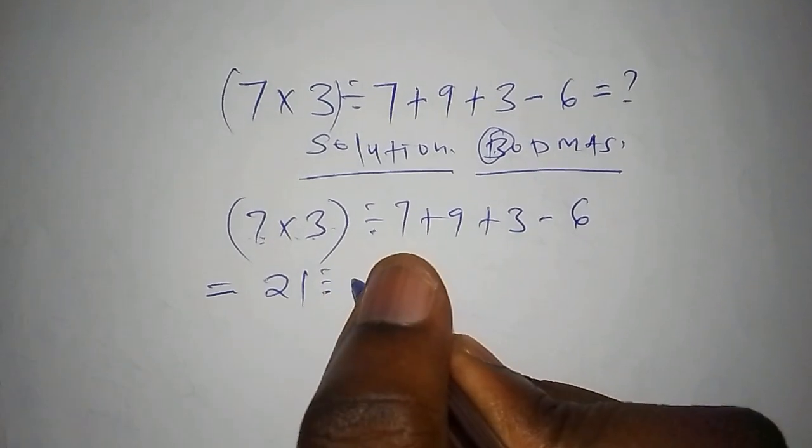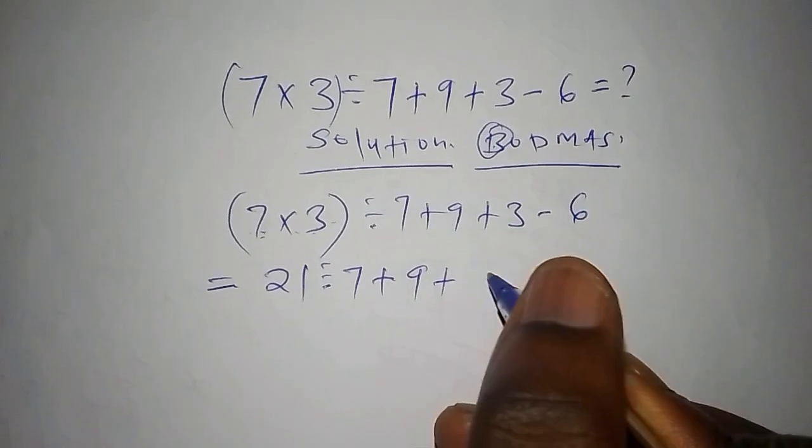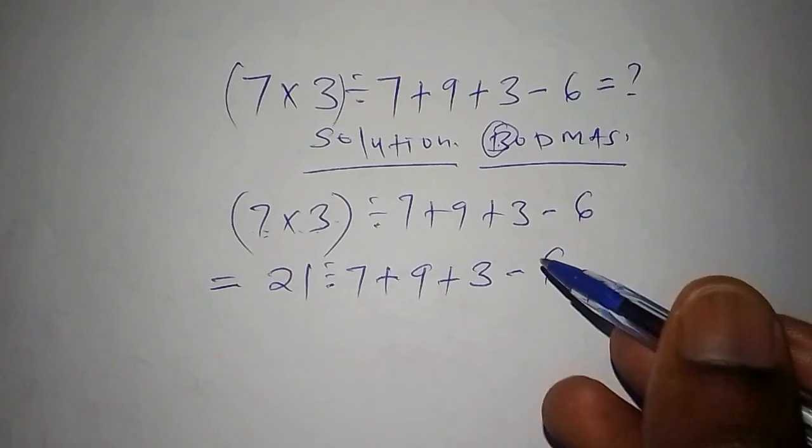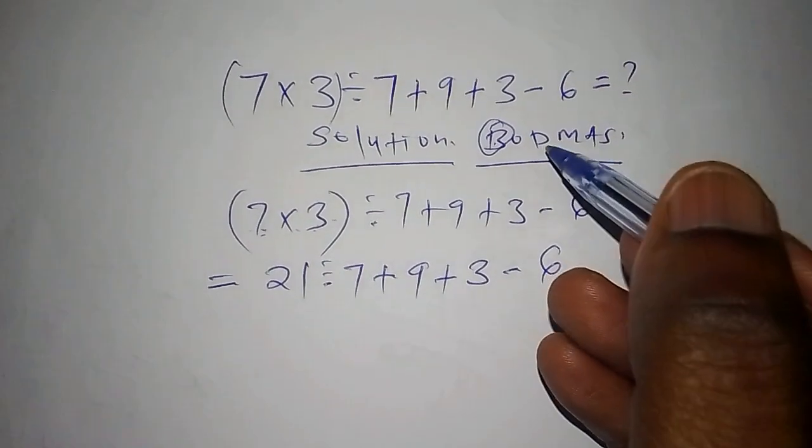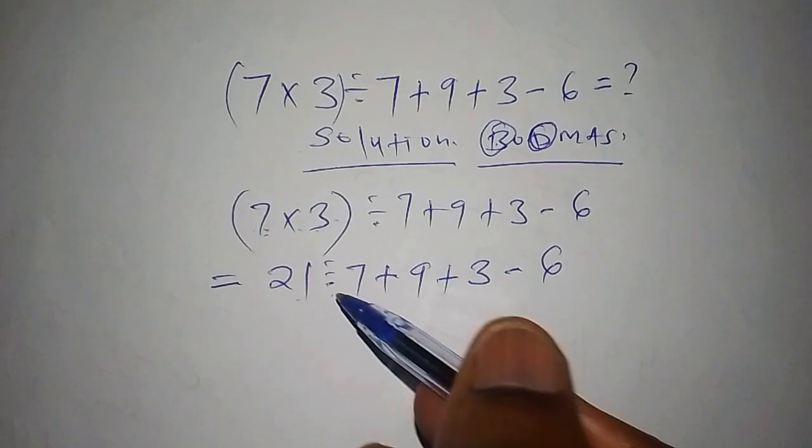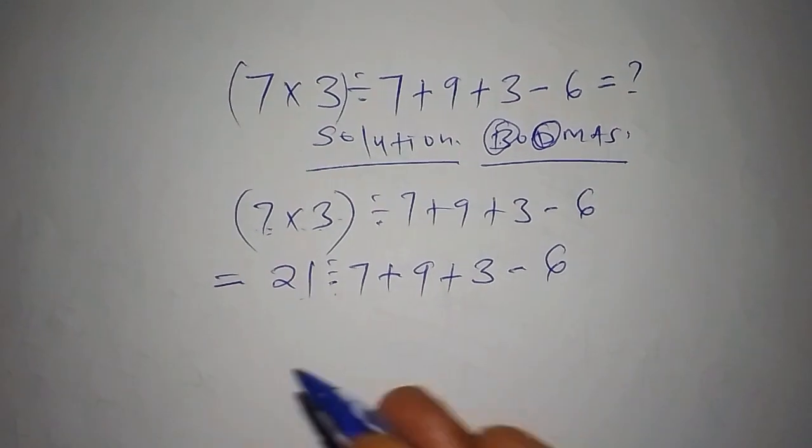So after the bracket, we're going to move to D, and D stands for the division sign. So work out the division sign first before rushing.